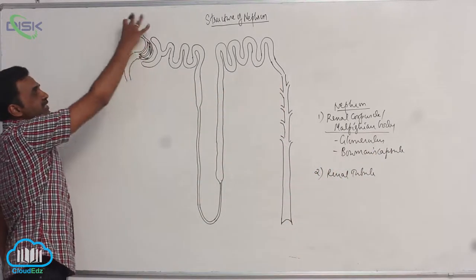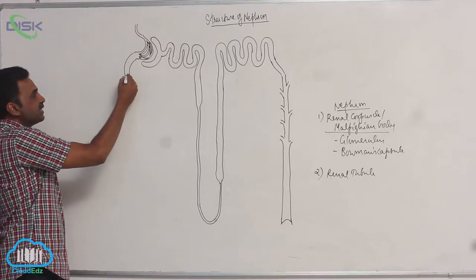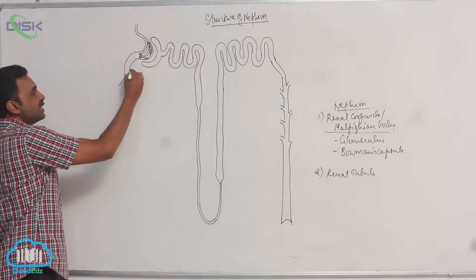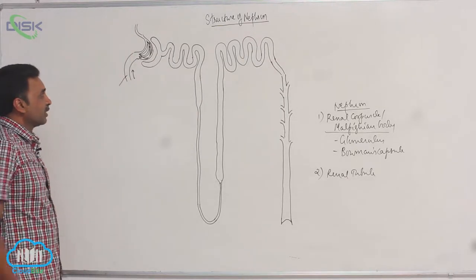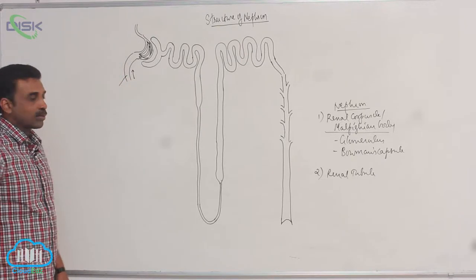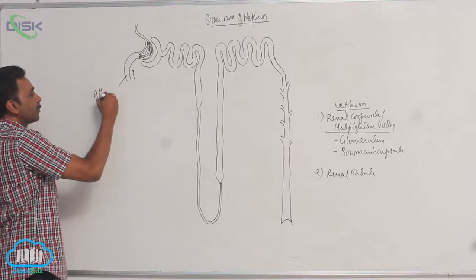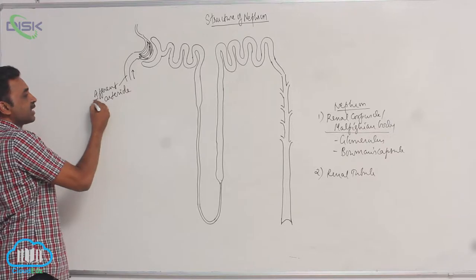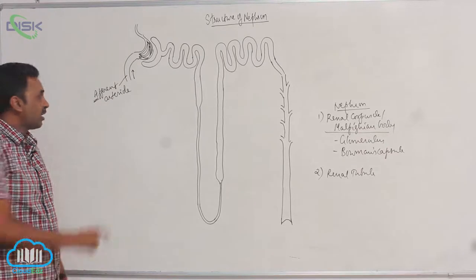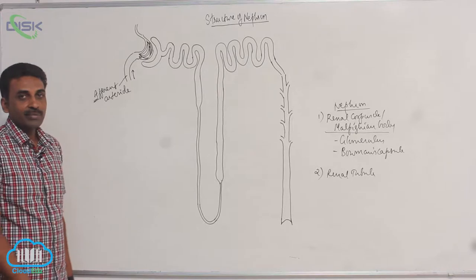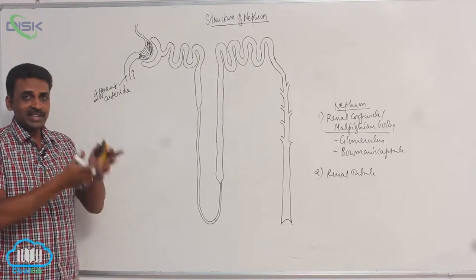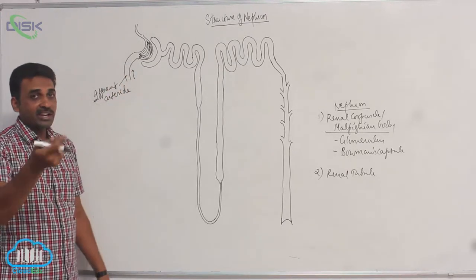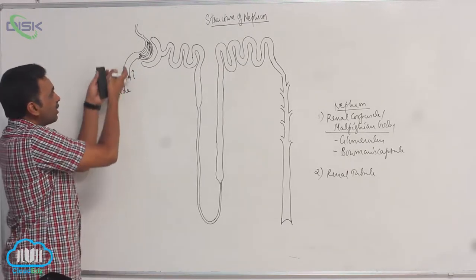This blood vessel brings blood to one nephron. This blood capillary is called the afferent arteriole. It is a branch of the renal artery. The renal artery, after entering the kidneys, divides several times and forms the afferent arteriole, which brings blood to the nephron.